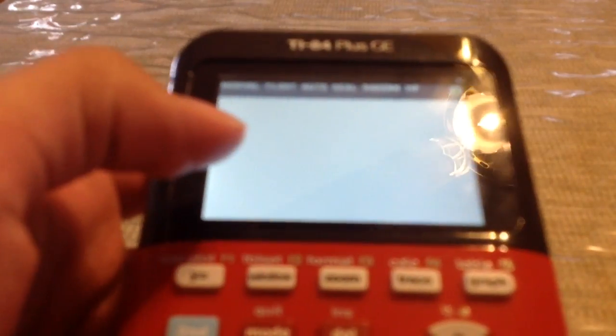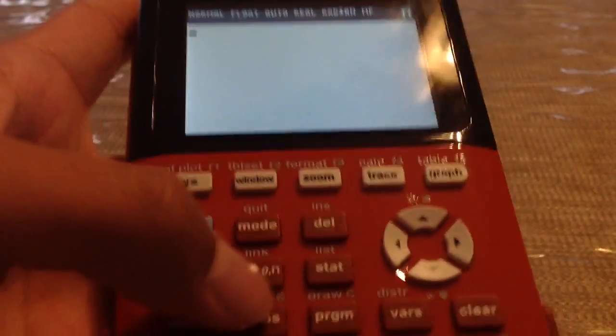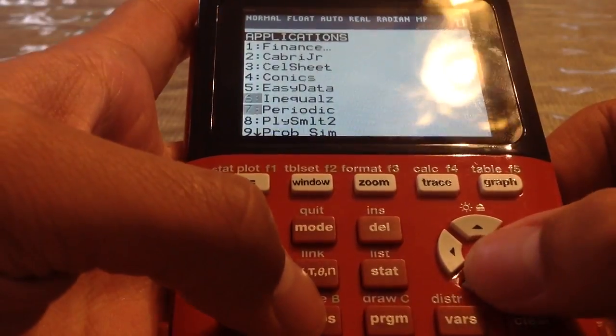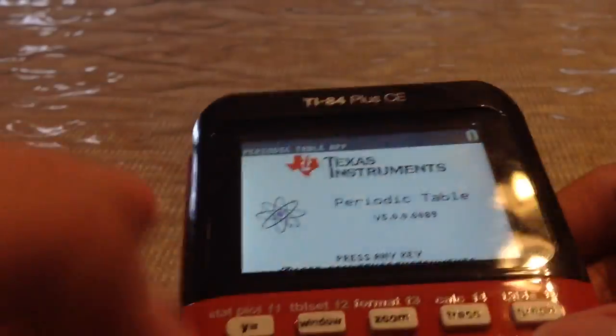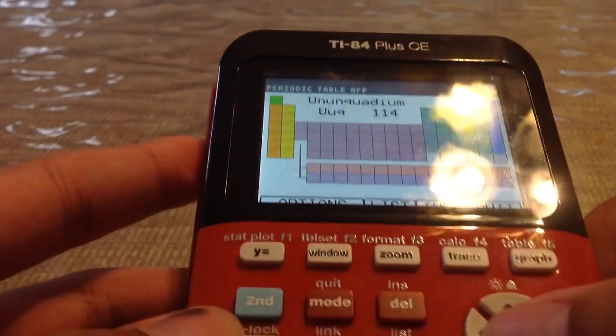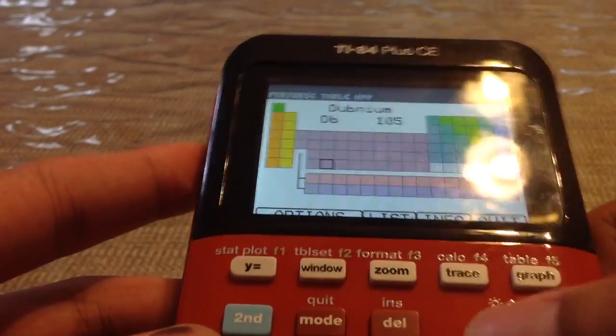Okay, one last quick thing. Focus up, go. If you go back to apps, then go to periodic, press any key, then yay, periodic table, all this stuff. Yeah, and that's it.